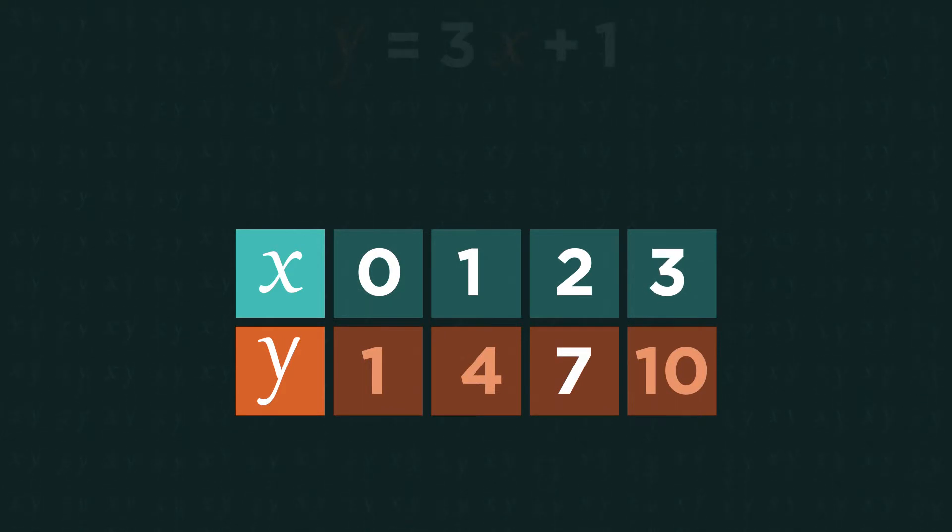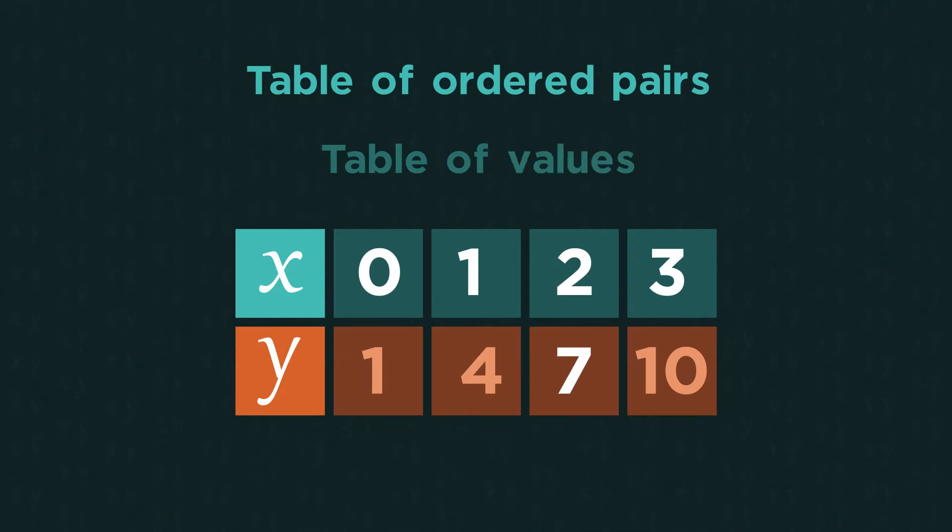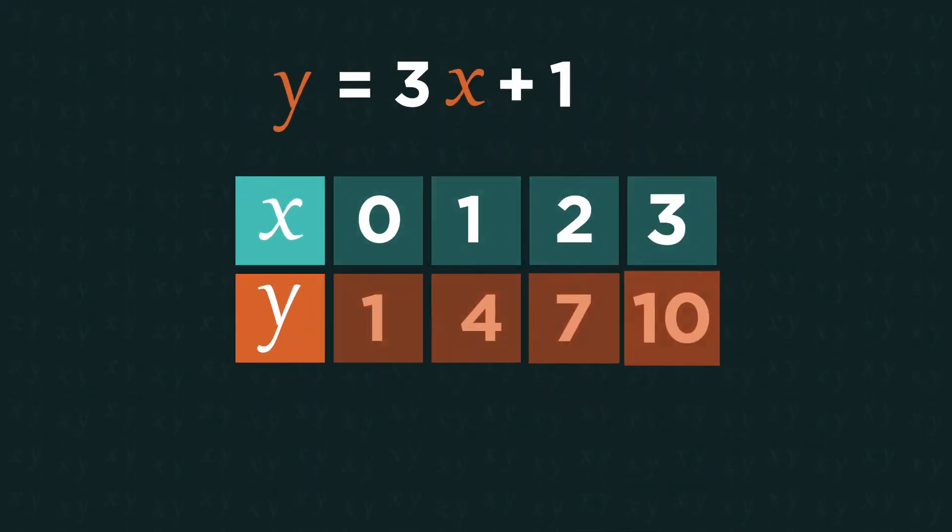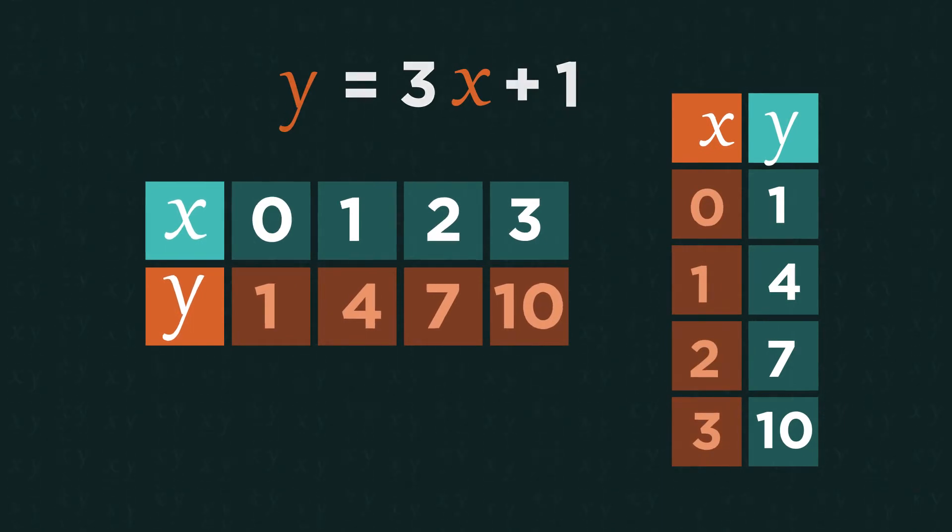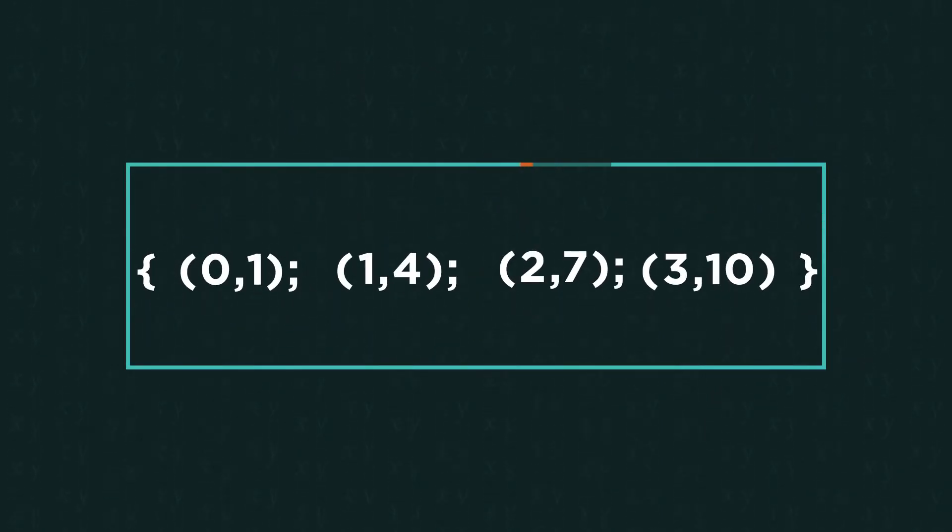This table we have generated is known as a table of ordered pairs or a table of values. It can be horizontal like this or vertical. We can then write out the values as ordered pairs.